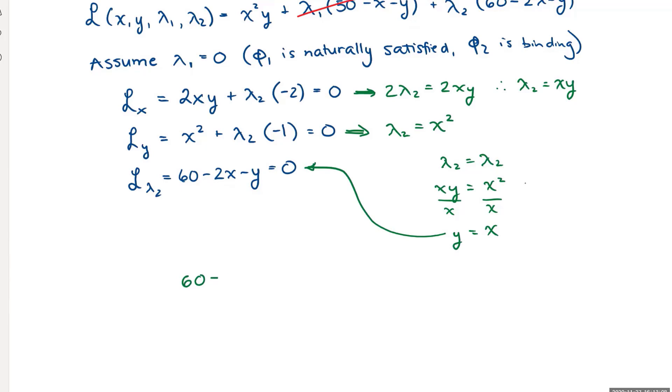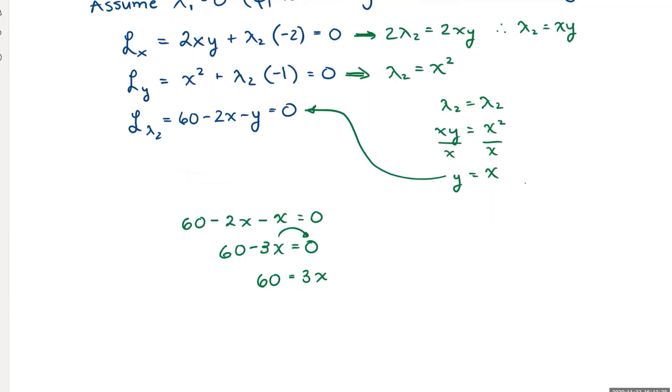Now I substitute this into the derivative with respect to lambda 2, and I get 60 minus 2x minus y will be x. So this gives me 60 minus 3x is equal to 0. Moving 3x over to the other side, I get 60 is equal to 3x. Dividing both sides by 3, I get x is equal to 20. Now if x is equal to 20, y is equal to x, so y is also equal to 20.